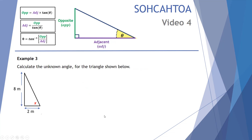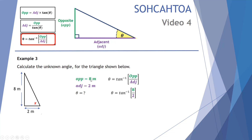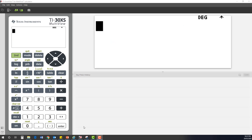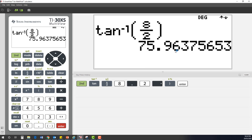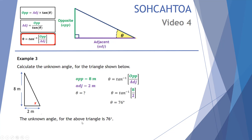Our third and final example asks us to calculate the angle theta. The opposite side is eight meters and the adjacent is two meters. We select the equation: theta equals inverse tan of opposite over adjacent. Substituting in: theta equals inverse tan of eight over two, which is effectively inverse tan of four. On the TI calculator, we press the second function button then tan to get inverse tan, then enter eight over two. This gives a value of 75.96, effectively 76 degrees. So the unknown angle for this triangle is 76 degrees.